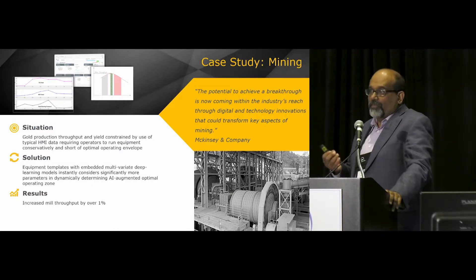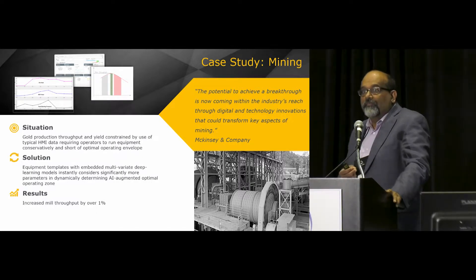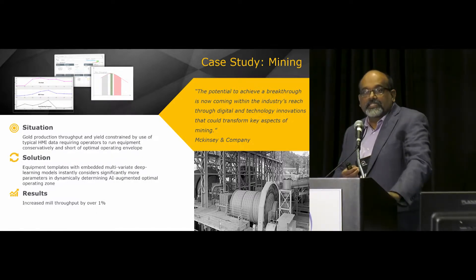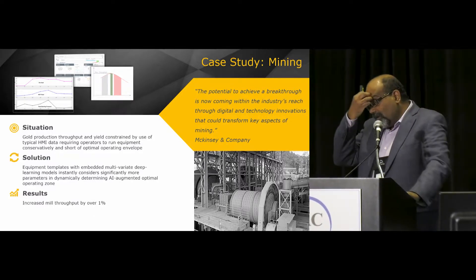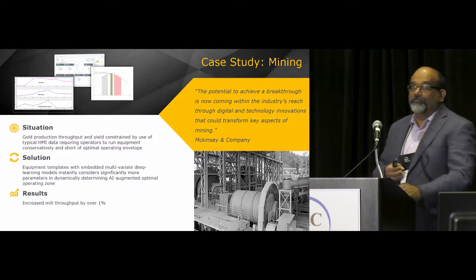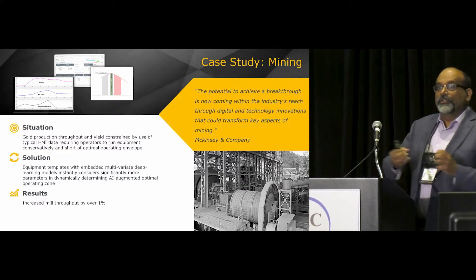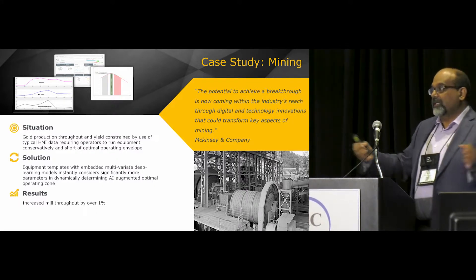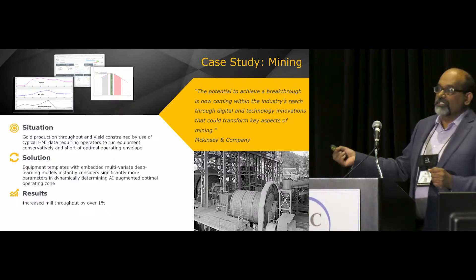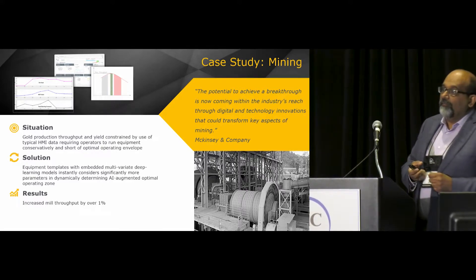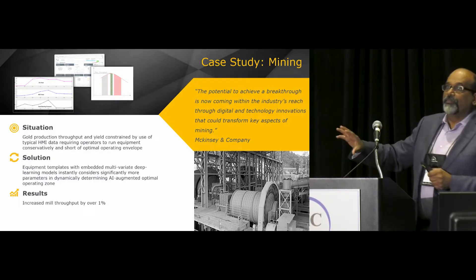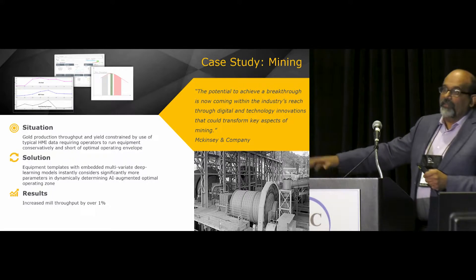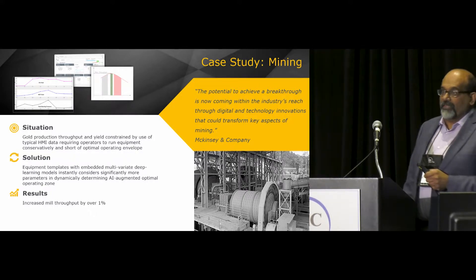You can do the math based on gold prices to see what the revenues coming out of that mine are. You have to process about 6,000 to 7,000 tons of ore to generate an ounce of gold. You're processing a huge amount of material through a complete set of operational processes to get a few ounces of gold at the end. Any kind of optimization you can do in throughput can have significant impact on your downstream revenue.